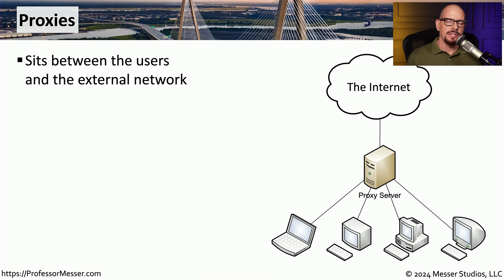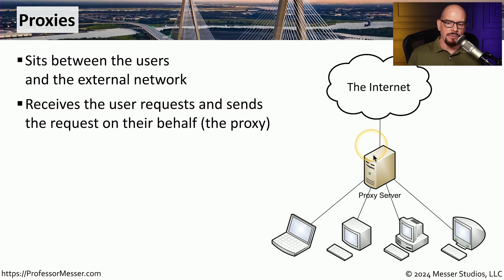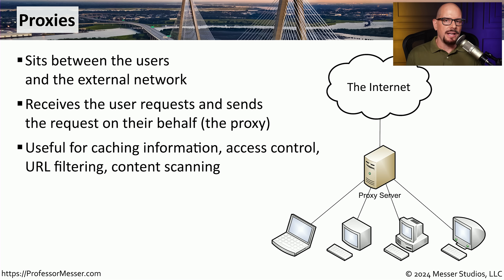Many organizations have security concerns about individual users being able to directly communicate with a server or service on the internet. One of the ways an organization can manage these connections is by putting a device in the middle of this conversation called a proxy. This proxy is responsible for taking the user's request, performing that request on their behalf, receiving the answer, verifying that the answer doesn't contain some type of malicious software or code, and then providing that answer to the end user. Since the proxy is sitting in the middle of the conversation, it's also a perfect place to do caching — the user can make a request, and if that request has already been cached, the answer goes right back to the user without having to access the internet.